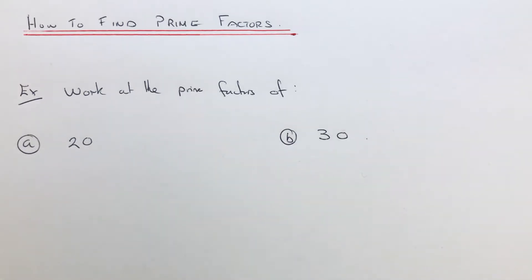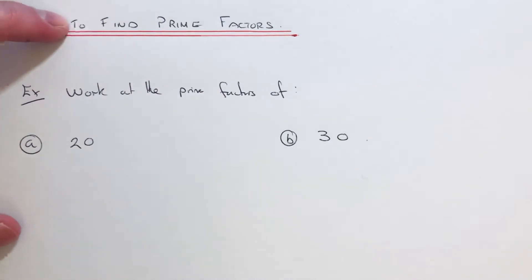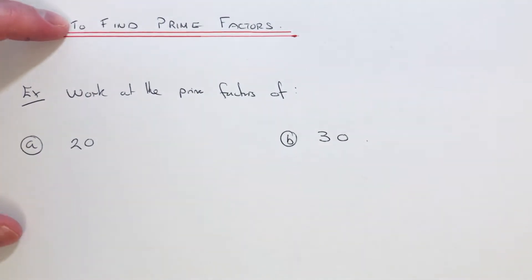Let's have a look at two examples. We're going to work out all the prime factors of the number 20. First of all, start off with your factors of 20. These are the numbers that divide exactly into 20 without a remainder.